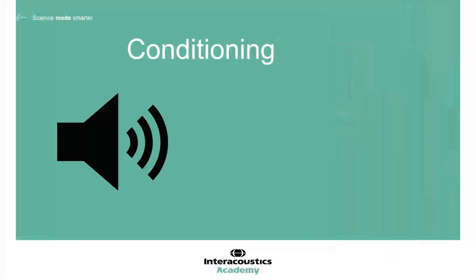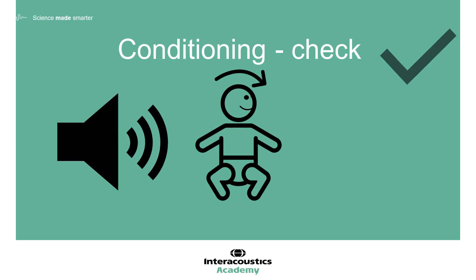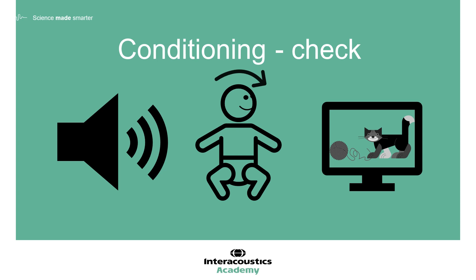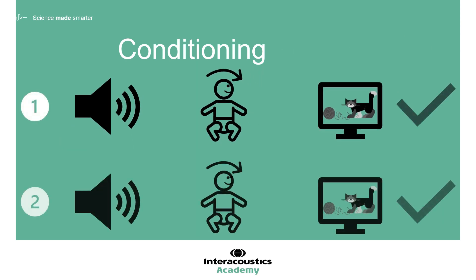In order to check that conditioning has been successful, the sound stimulus should be presented on its own. If the child performs an independent head turn towards the visual reinforcer, the reinforcer should then be displayed. If the child doesn't turn after a second or two, the reinforcer should be displayed as part of ongoing conditioning, with appropriate involvement from the second tester. Successful conditioning is determined by at least two independent head turns towards the visual reinforcer in response to the sound stimulus alone. Once successful conditioning has been established, the testing phase can begin. It may be necessary to recondition the child during testing if it appears that they have lost the association between the sound stimulus and the visual reinforcer.